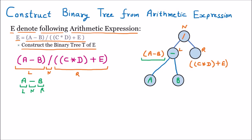Now it is time to construct the right hand side. The right side expression is C into D in the inner bracket, plus E. We know the arithmetic expression is infix, so the middle will be the parent. Breaking it into three parts, we find plus is the parent, C into D is the left child, and E is the right child.